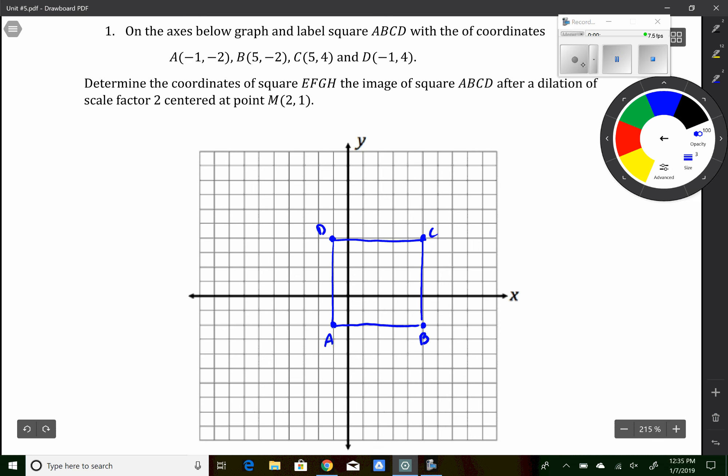Then I want to graph the point 2, 1. Looks to be right about in the center of the square, which will make this kind of easy. Alright, so to dilate this about point M.